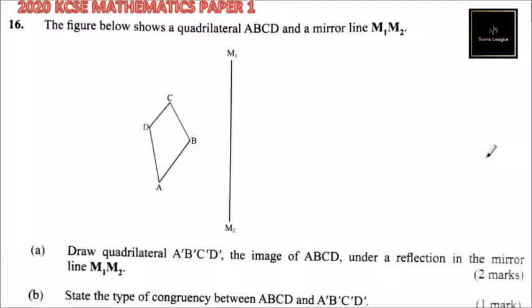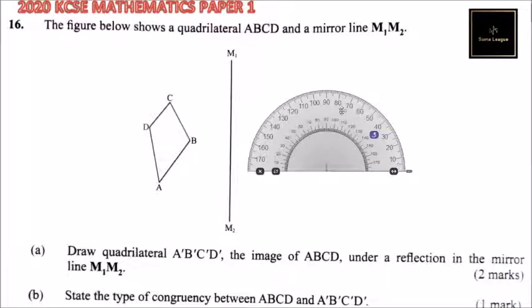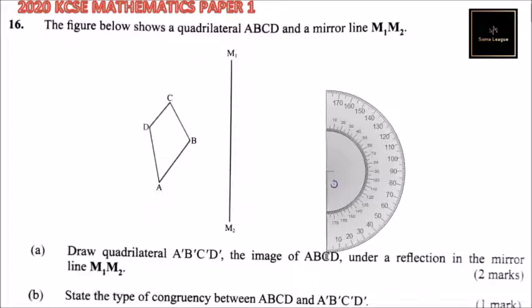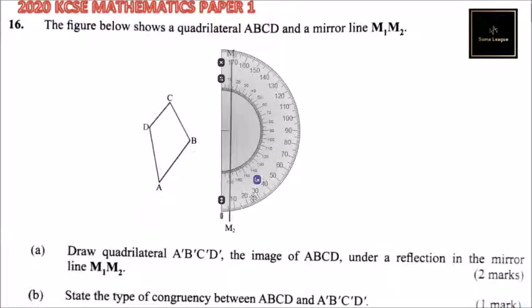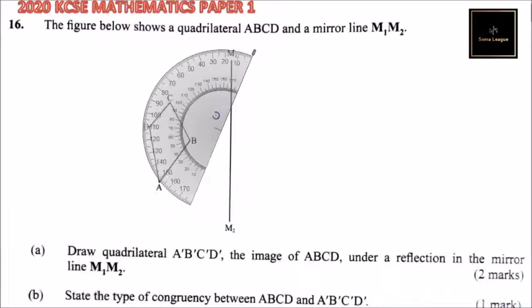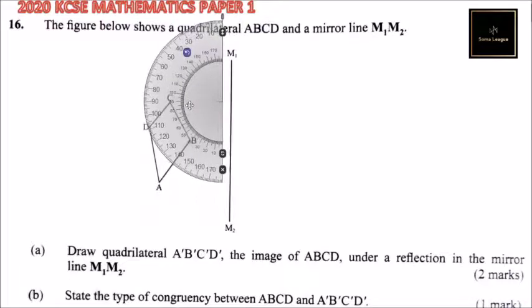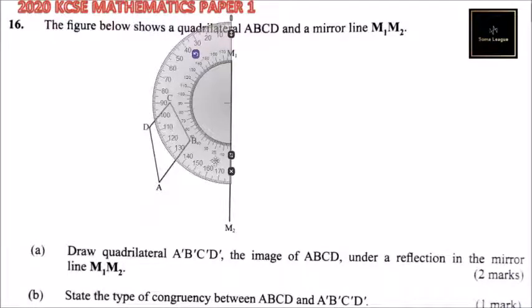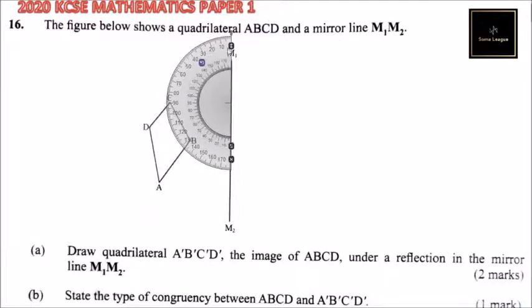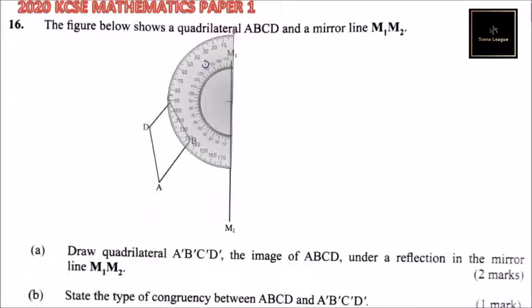Another way is you can use a protractor to be able to get the line here and then you use a ruler. I find it easier for me to use a protractor and I can mark, I can get the angle 90 from the mirror line. So I'll be able to set my protractor from the mirror line. Let me set it properly.